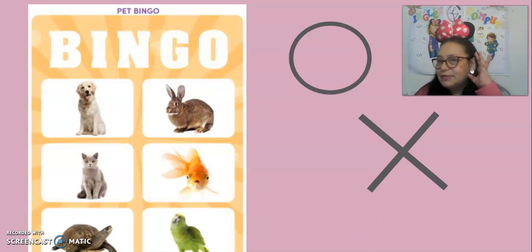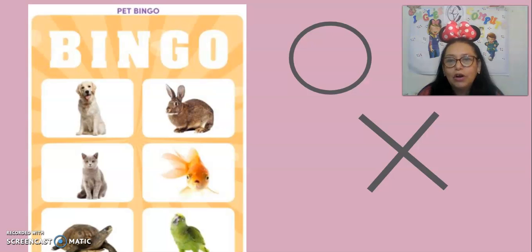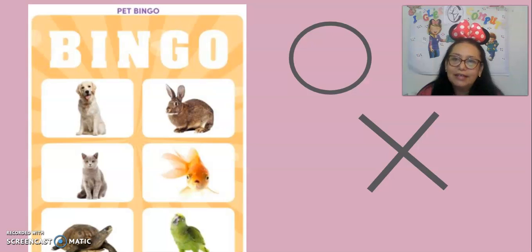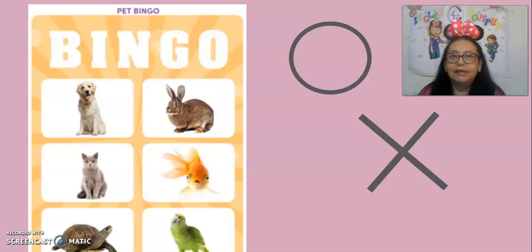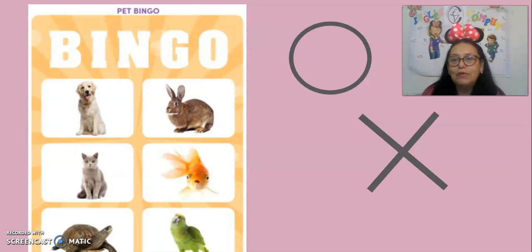Listen carefully. Circle the dog with color red. Circle the fish with color blue. Circle the turtle with color green. Cross out the rabbit with color yellow. Cross out the cat with color red.